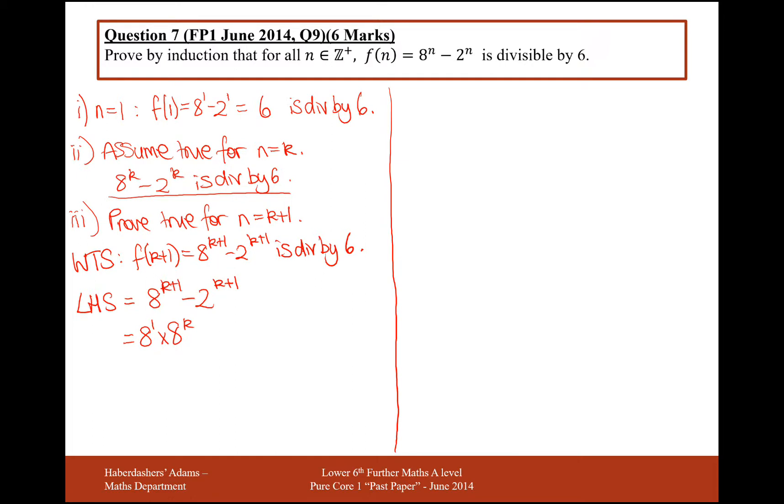It's the opposite of the rule, where if you've got the same base number, you add the indices when you're multiplying. Okay, and take away 2 to the 1 times 2 to the k. And this is the same as 8 times 8 to the k minus 2 lots of 2 to the k.